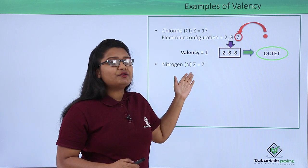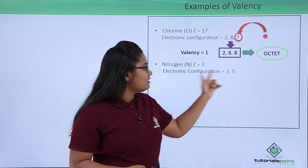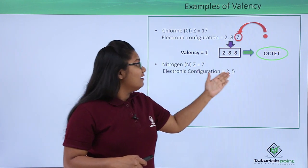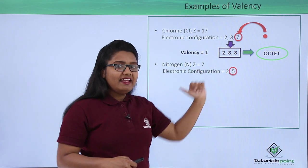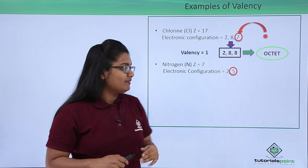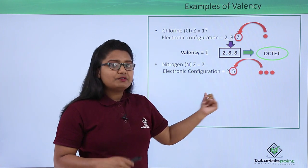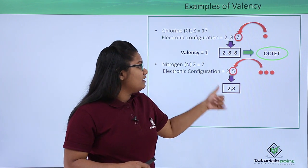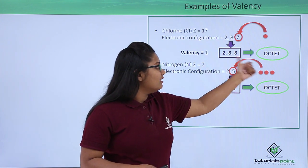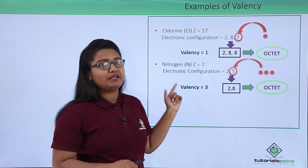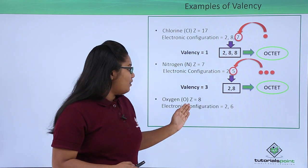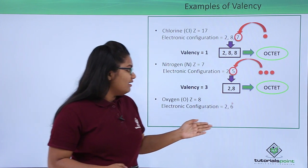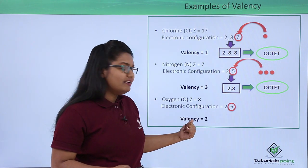The next example is nitrogen, whose atomic number is 7, so its electronic configuration is 2, 5. There are 5 electrons in the outermost shell. It has to lose 5 electrons or gain 3 electrons to reach an octet configuration. Acquiring 3 electrons is easier than losing 5, so nitrogen acquires 3 electrons and its valency is 3. Same applies to oxygen, where the atomic number is 8 and there are 6 electrons in the valence shell — it acquires 2 electrons and its valency is 2.